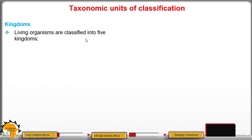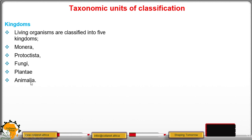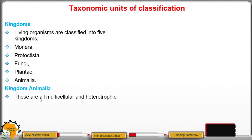Organisms are grouped into five kingdoms: Monera, Protoctista, Fungi, Plantae, and Animalia. In kingdom Animalia, the organisms are multicellular — they have several cells — and they do not make their own food. Therefore, they depend on plants or other animals; hence, they are heterotrophic.